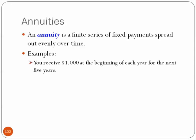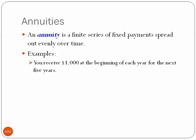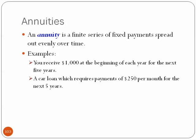An annuity is a finite series of fixed payments spread out evenly over time. For example, you receive $1,000 at the beginning of each year for the next five years. A car loan which requires payments of $250 per month for the next five years. A pension which pays $3,000 per quarter for 25 years. These are finite fixed payments spread out over time.